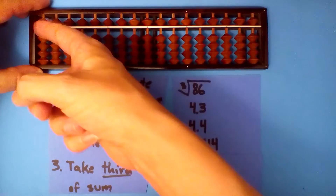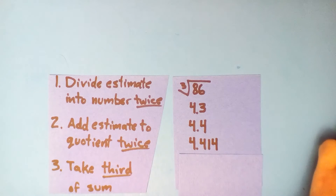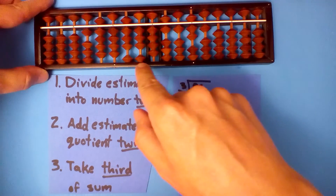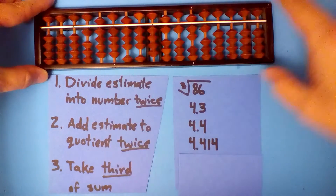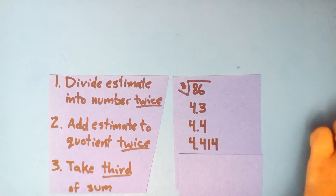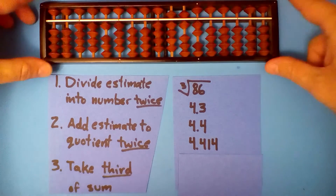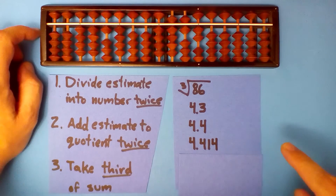What's 4.414 into 86? You should get 19.48346171. Repeat this — divide 4.414 into this number. After you do that, add 4.414 twice and divide by 3.